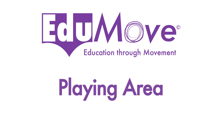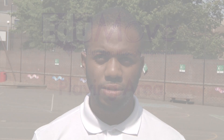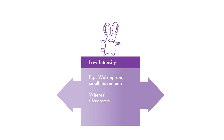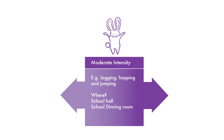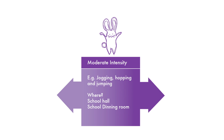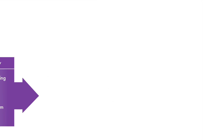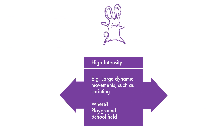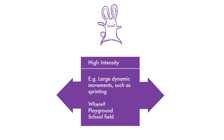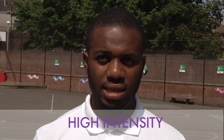Each playing area is categorized by three intensities. Low intensity can take place in the classroom with children walking around. Moderate intensity can take place in a small sports hall or gym where they're running but don't have to run far. High intensity takes place in a playground where they run further and increase their cardiovascular heart rate. This game will take place at high intensity.